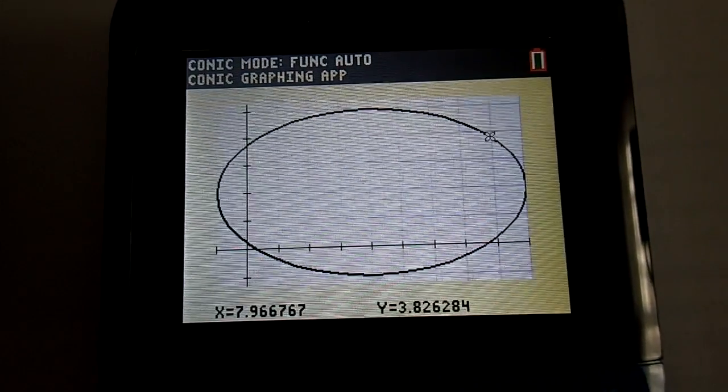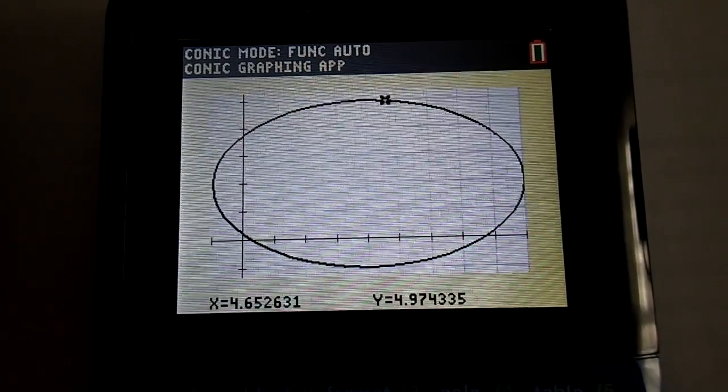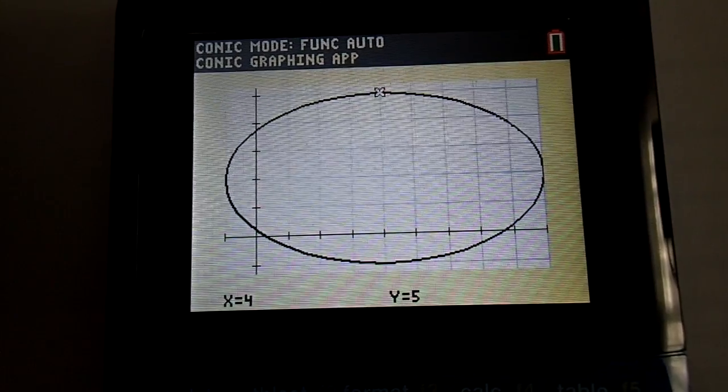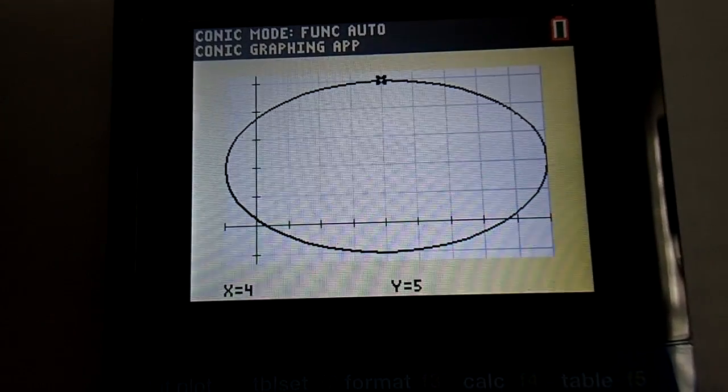Right now one of the vertexes is located at X equals 9 and Y equals 2. Now we'll move to one of the co-vertexes on top. Remember, the co-vertexes are located on the minor axis of the ellipse. And there is one at X equals 4 and Y equals 5.